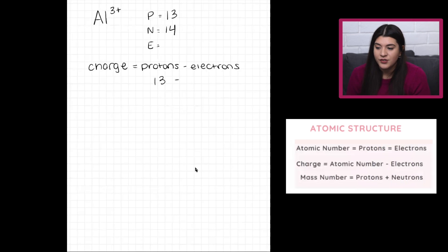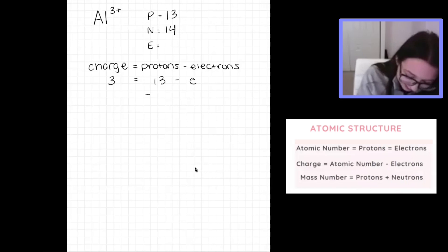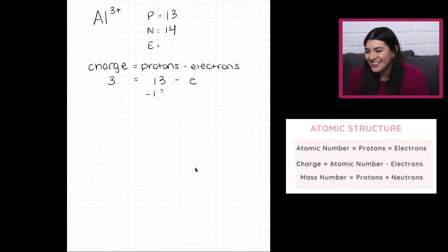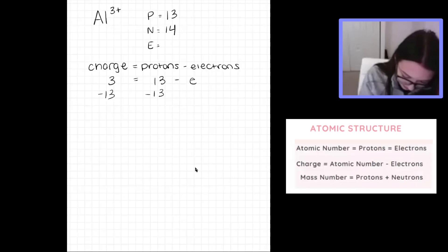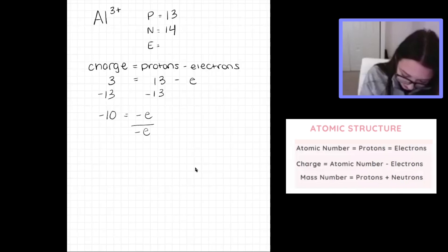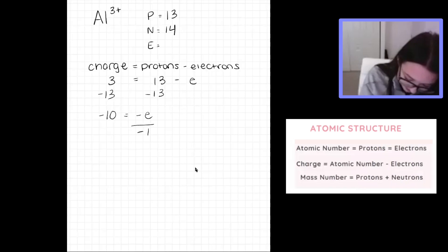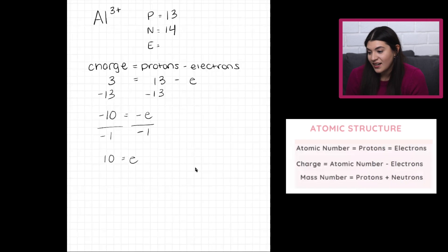We know the protons. We don't know electrons, so we put E and that's what we're solving for. We know the charge is positive 3. Setting that equal: 3 = 13 minus E, which gives us E = 10. So we have 10 electrons. That's it.